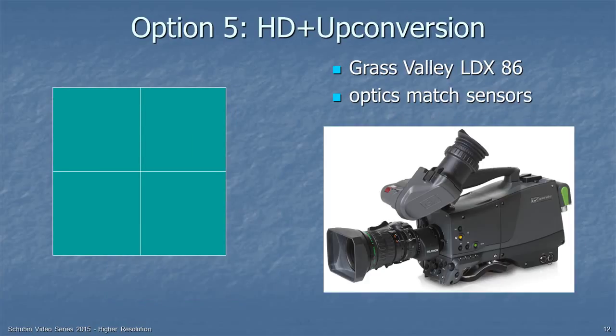And as long as there's up-conversion, here's option 5 — what Grass Valley is doing in its 4K camera. Optically it's basically an HD camera: three HD chips, HD prism, HD lenses. But that means everything matches perfectly, and if you're going to be doing up-conversion anyway, it's nice to have proper optical filtering before that up-conversion.